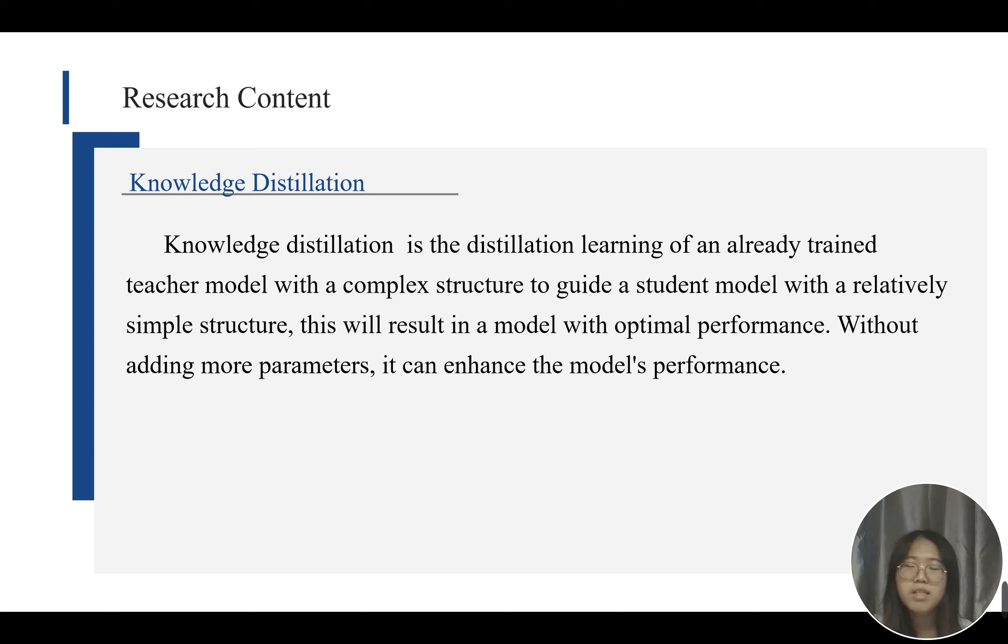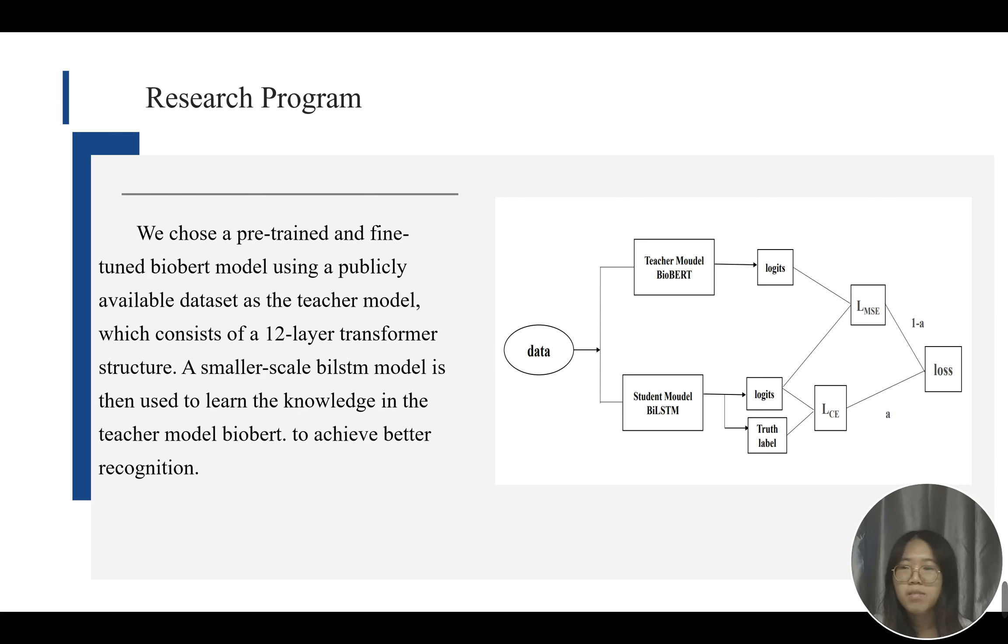The knowledge distillation is the distillation learning of an already trained teacher model with a complex structure to guide a student model with a relatively simple structure. This will result in a model with better performance. Without adding more parameters, it can enhance the model's performance. We chose a pre-trained and fine-tuned BioBERT model with a publicly available dataset as the teacher model, which consists of a 12-layer transformer structure. A small-scale BiLSTM model is then used to learn the knowledge in the teacher model by BioBERT to achieve better recognition.